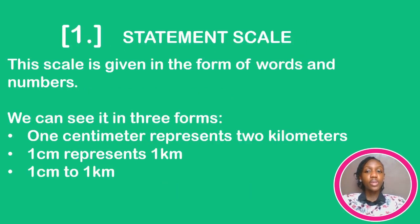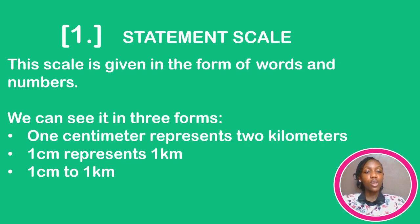Now, a Statement Scale. Some people may think that this scale includes only words, but don't let the name fool you. Statement Scale also includes numbers. We can see it in these three forms — these are just examples: 'One centimeter represents two kilometers,' 'One centimeter represents one kilometer,' and 'One centimeter to one kilometer.' Even though it sounds the same when said aloud, in written form you can see the difference.